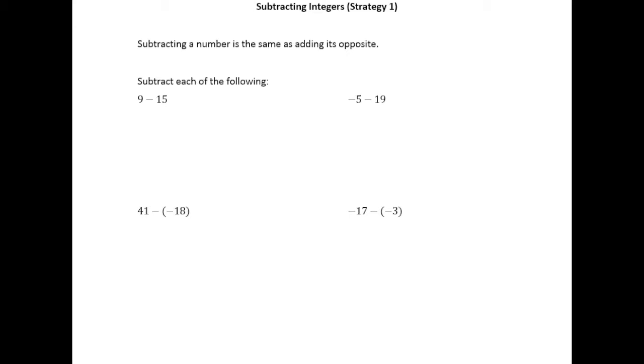Now what both this strategy and the other one really hinge upon is the fact that subtracting a number is the same as adding its opposite. So for example, subtracting 7 is the same as adding negative 7.